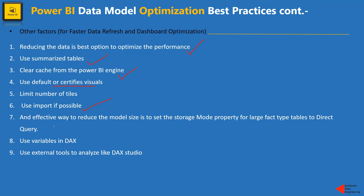Another effective way to reduce data model size is to set the storage mode property for large fact-type tables. When you publish your report to Power BI Service, you can go into settings for that report and find an option to set this property for large fact-type tables, which will effectively reduce the model size. Also, when creating DAX, try to use variables, and if you have too many DAX measures, do some fine tuning using external tools like DAX Studio for performance analysis.